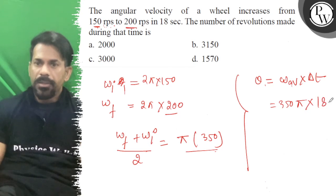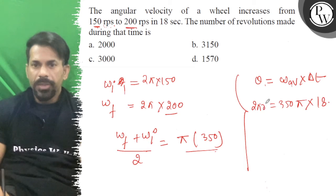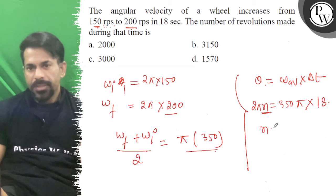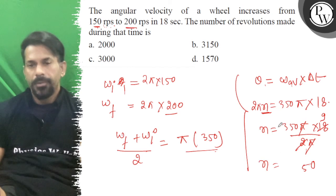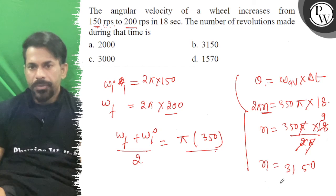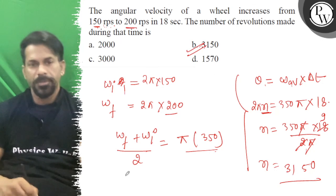This is 2π into n, number of revolutions. So n is equal to 350π into 18 upon 2π. So π cancels, 9 goes in, so n is equal to 3150. So the right answer is 3150, option B is correct. All the best!